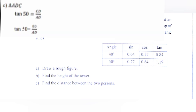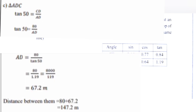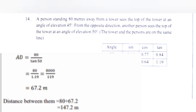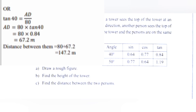Continuing question 14: Using tan 50 degrees, the distance from the second person to the tower is calculated as 18 divided by tan 50 degrees, approximately 67.2 meters. Therefore, the distance between the two persons equals 80 plus 67.2 equals 147.2 meters.